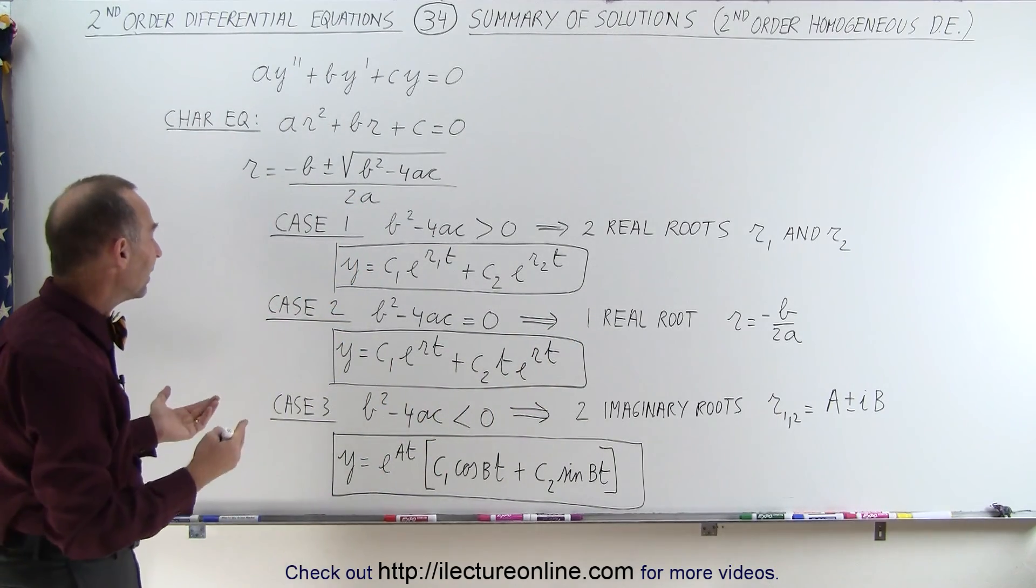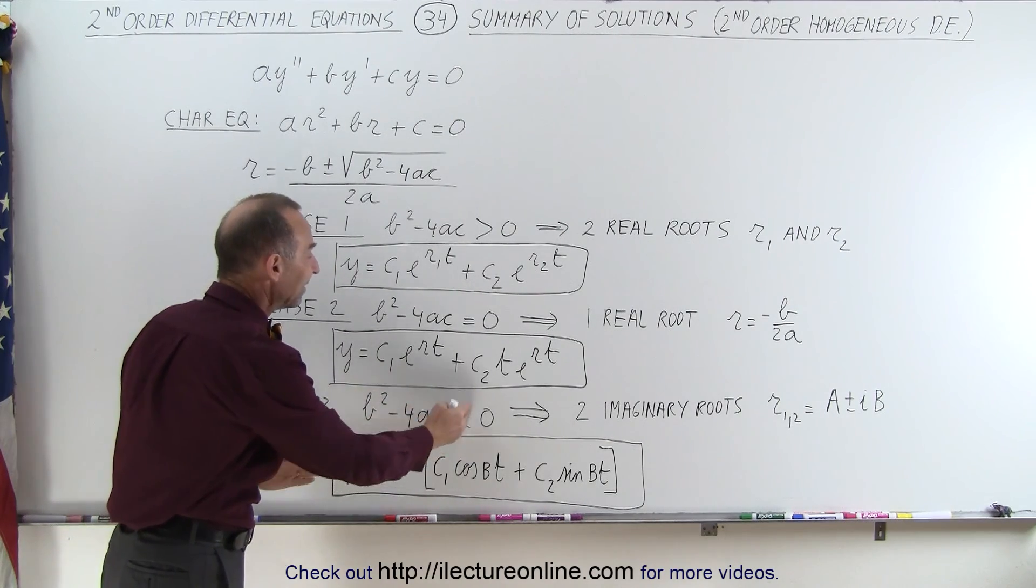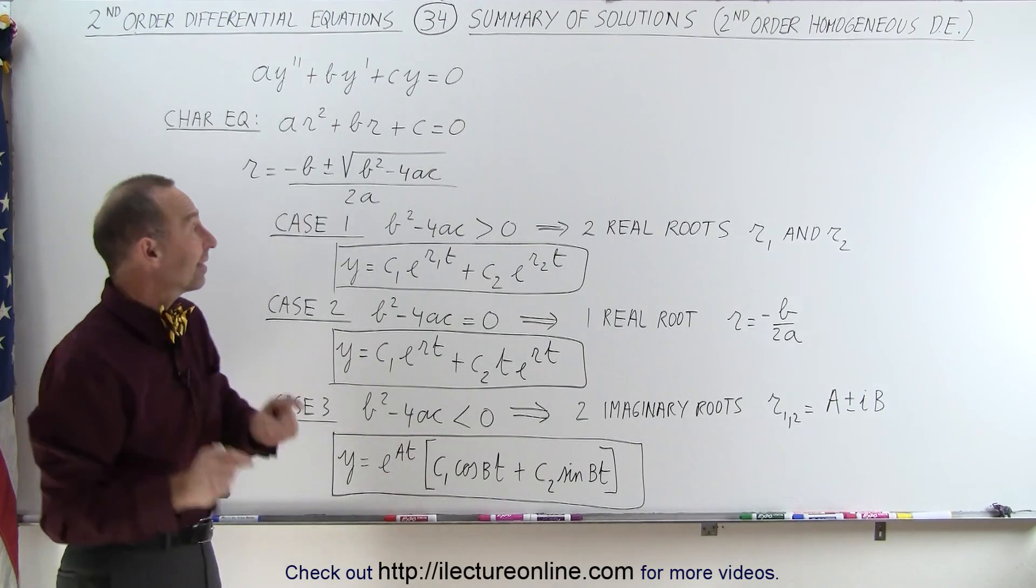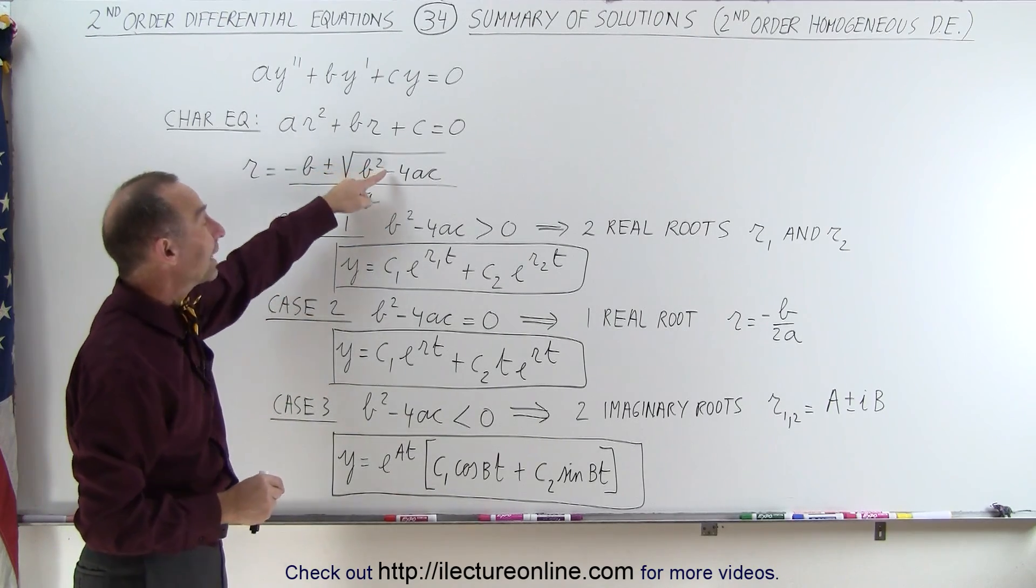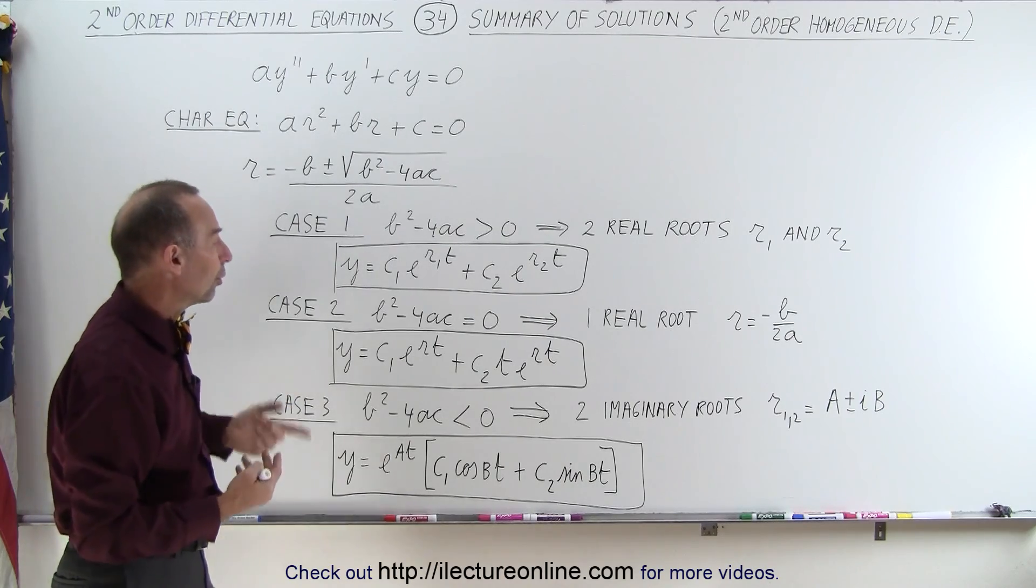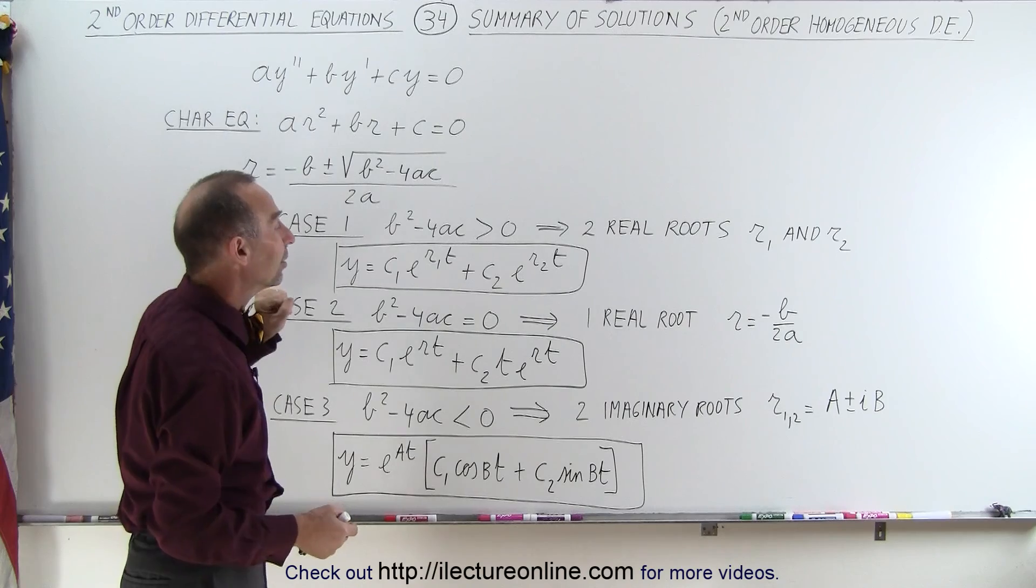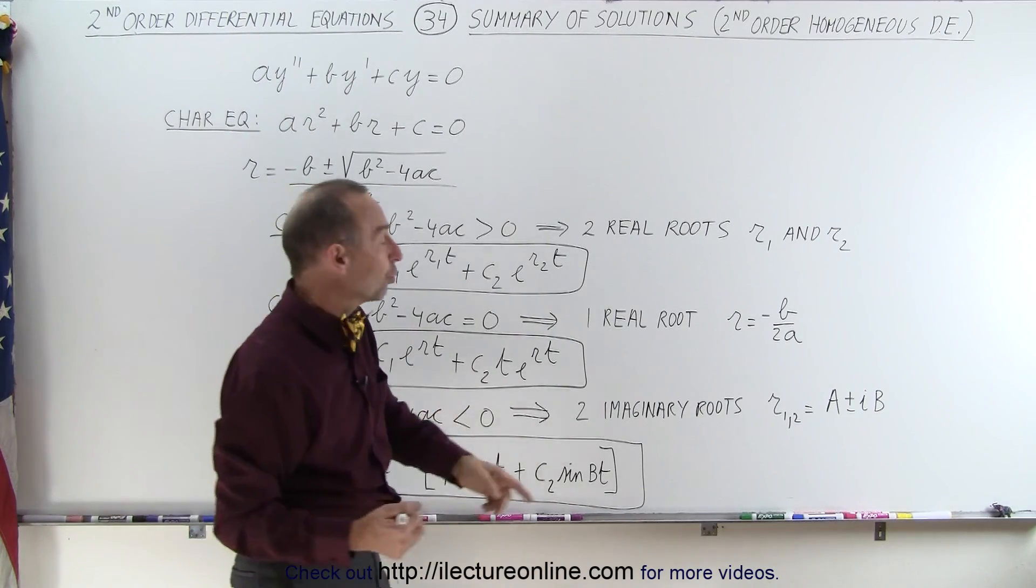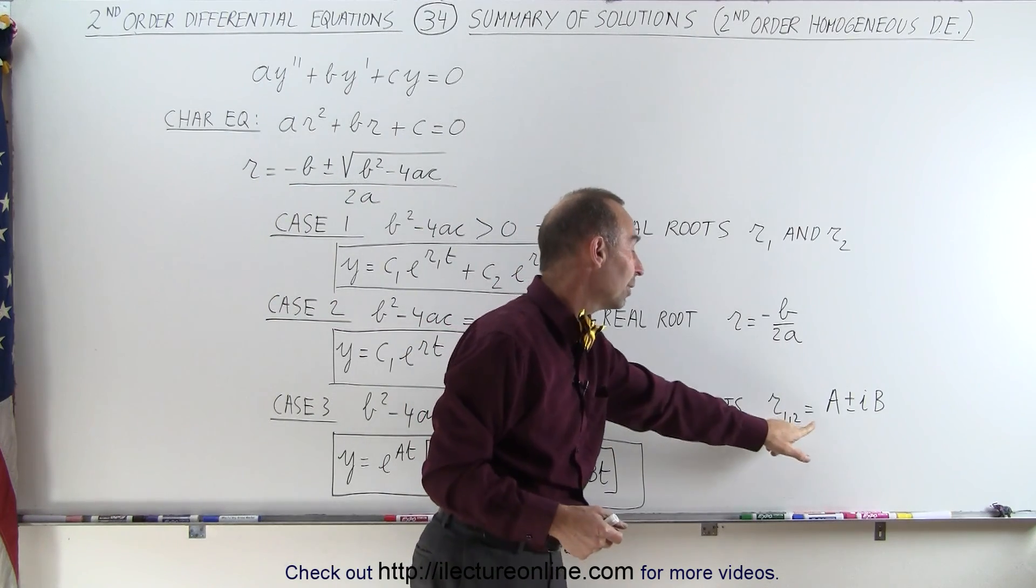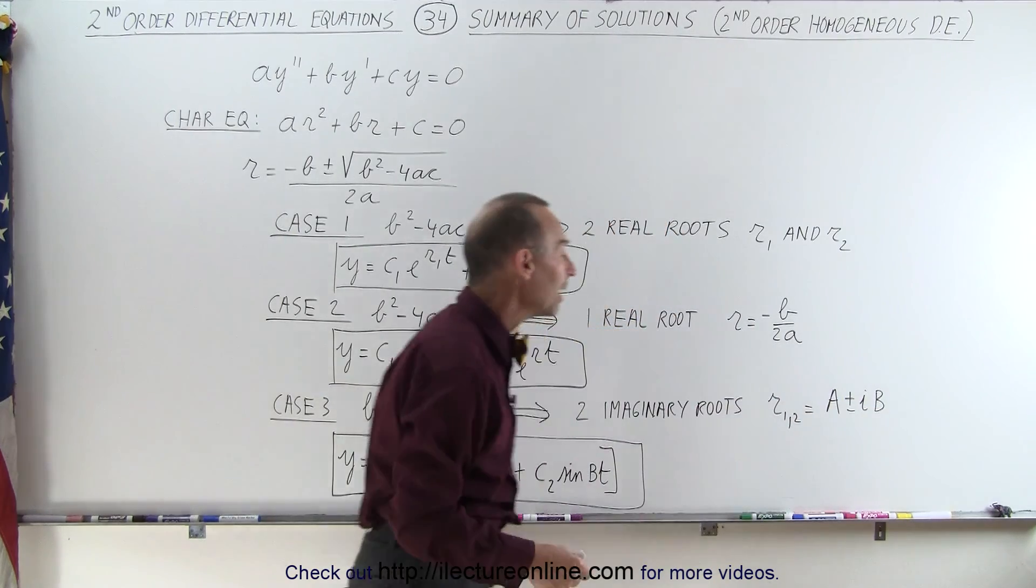And finally, the third case is where the amount b² - 4ac is less than zero. If it's less than zero, we have the square root of a negative number, which gives us an imaginary number. Therefore, there will be two imaginary roots, one for the plus and one for the minus, and the general form of those will be r₁,₂ = a ± bi, the real part plus or minus the imaginary part, i times b.